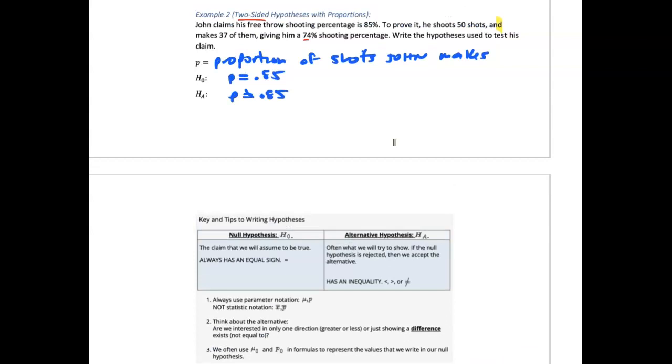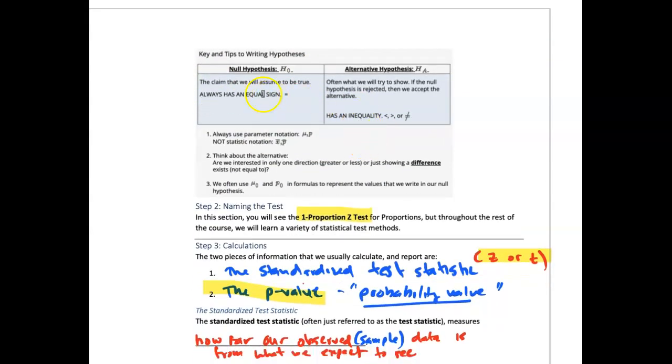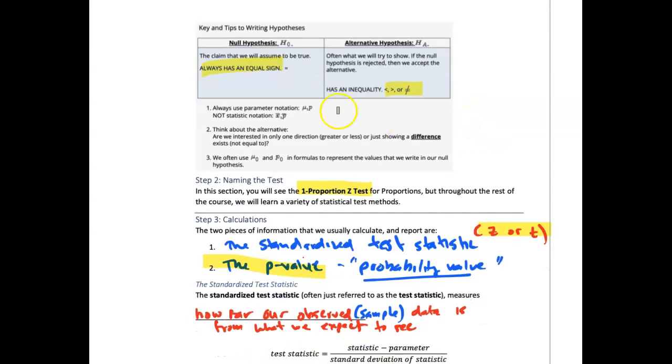Now, there are some keys to writing a null hypothesis. You can go ahead and read this here. The null hypothesis always has an equal sign. The alternative is going to be an inequality sign. Less than, greater than, or not equal.